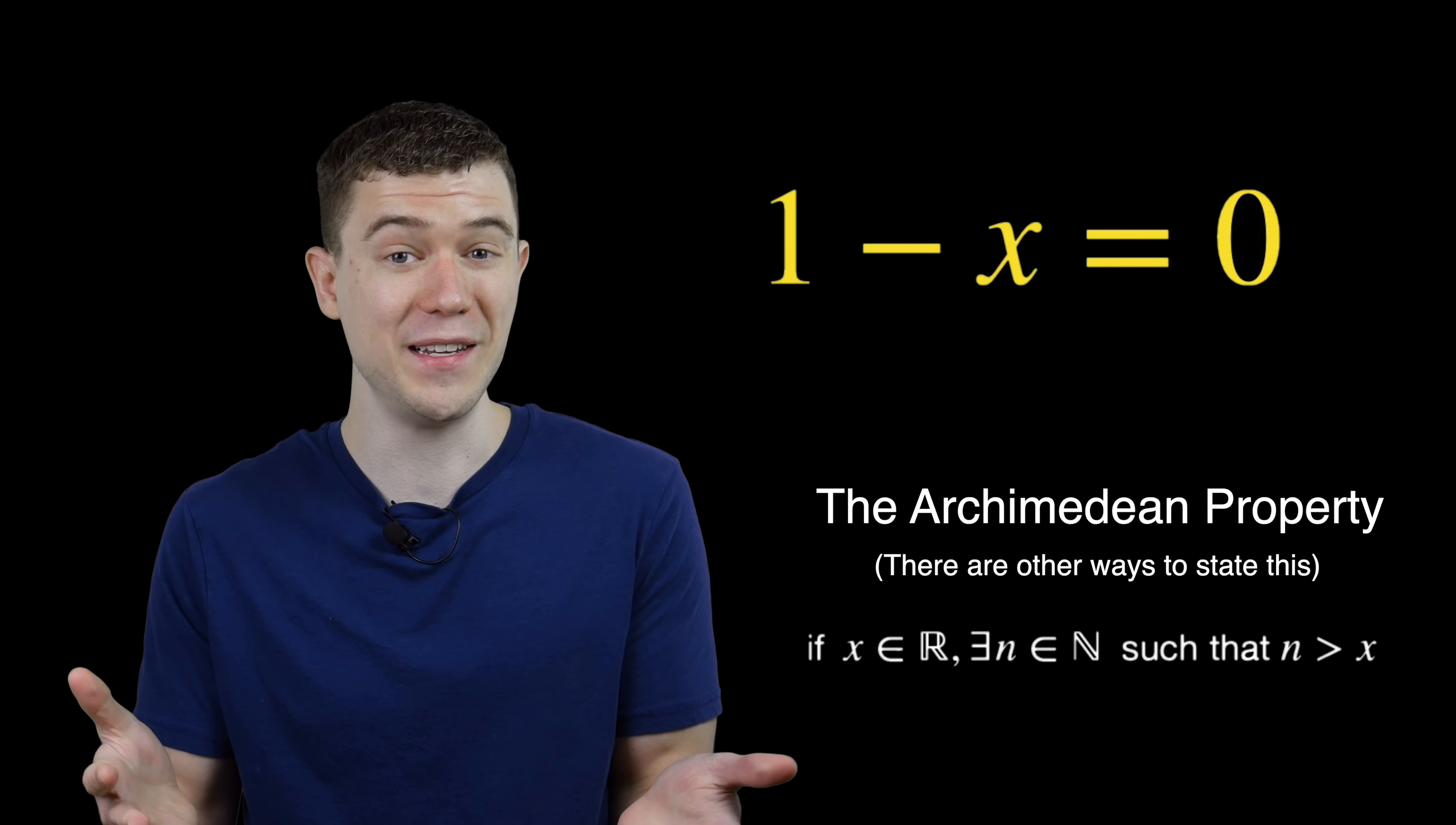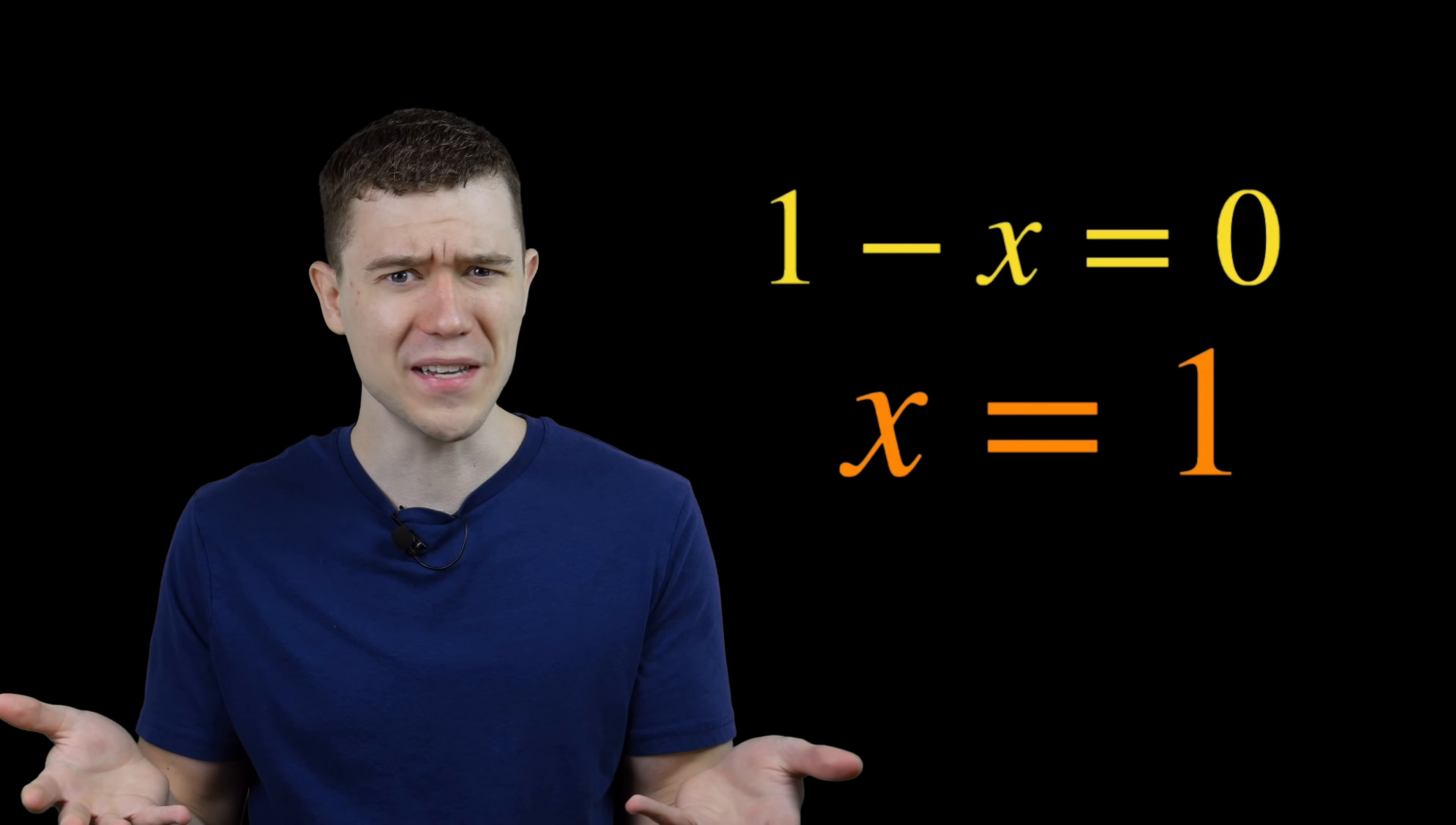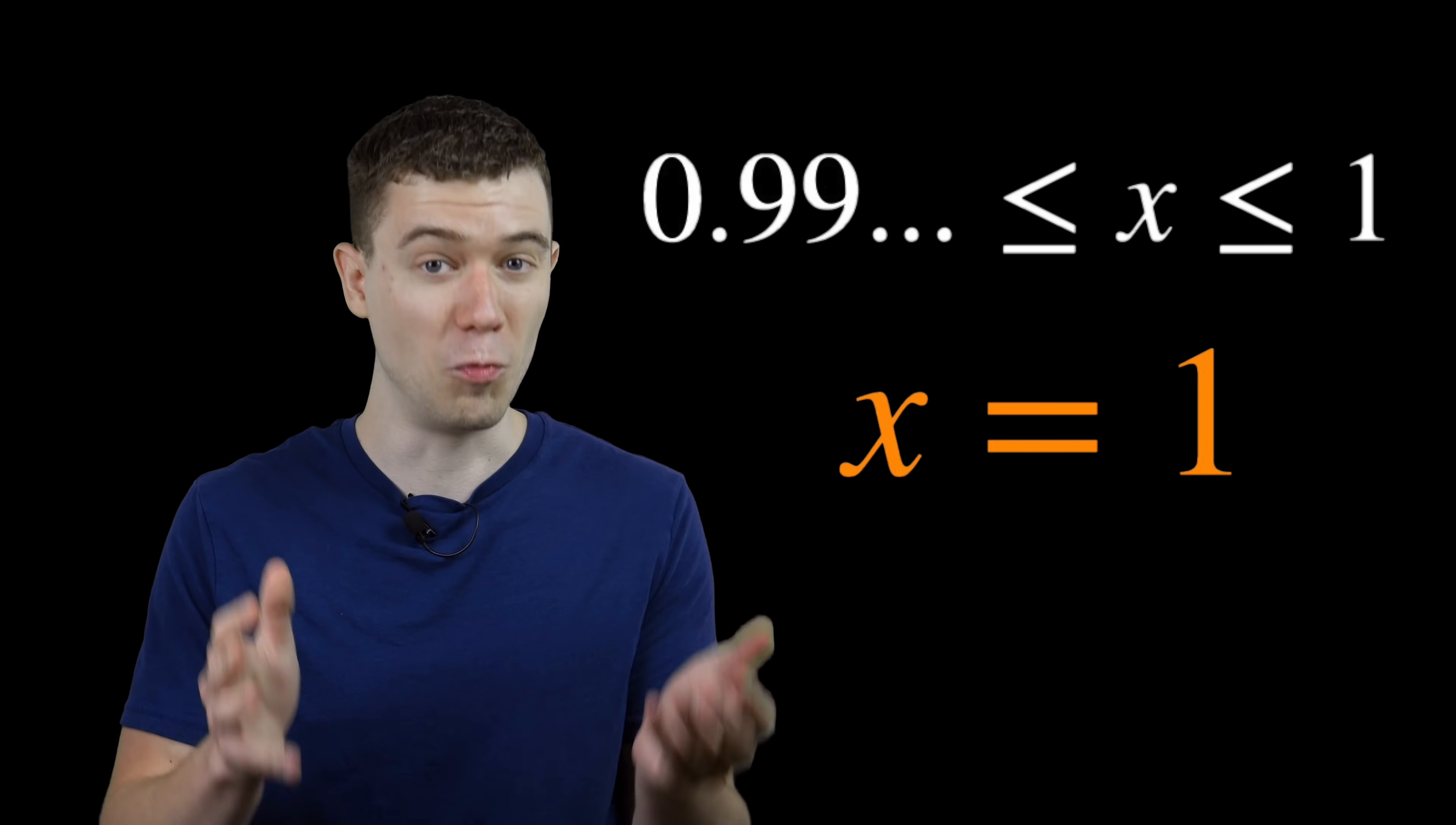Well, if 1 minus x has to be 0, that means x has to be 1. What was x in the first place? x was that thing between 0.9 repeating and 1.